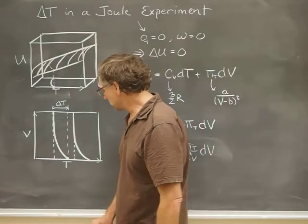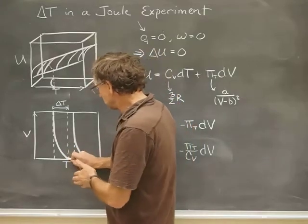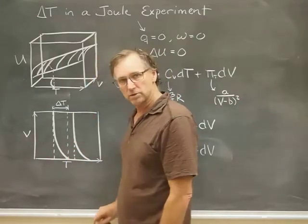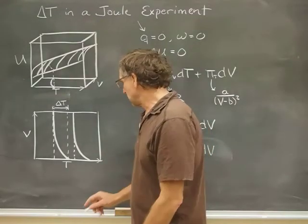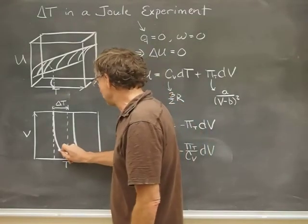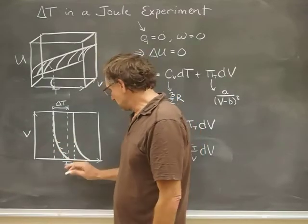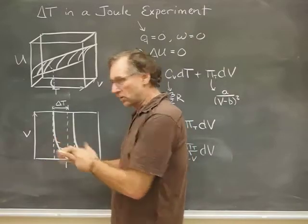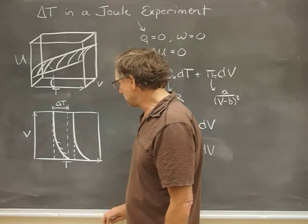So the delta T that we're looking for in this experiment would be, we start off at this temperature, we end up at that temperature, there's that delta T. That's what we're looking for. The way we're going to do that is to say, well, what if I just marched along, imagine marching along here in small increments, and there's a change in temperature, a little dT, and there's a change in volume, a little dV, every step of the way.